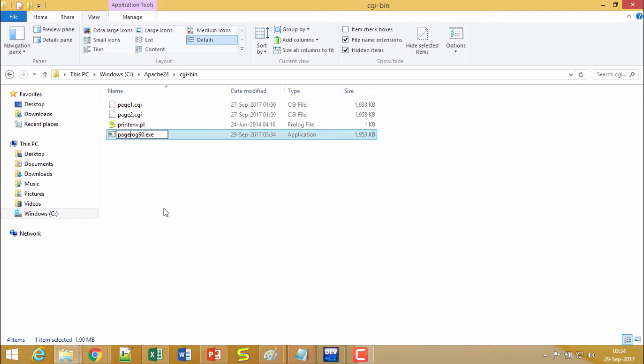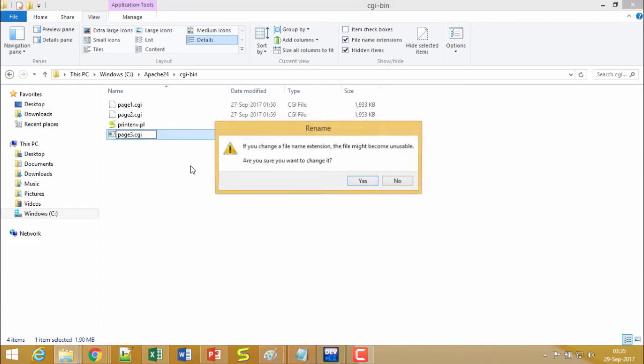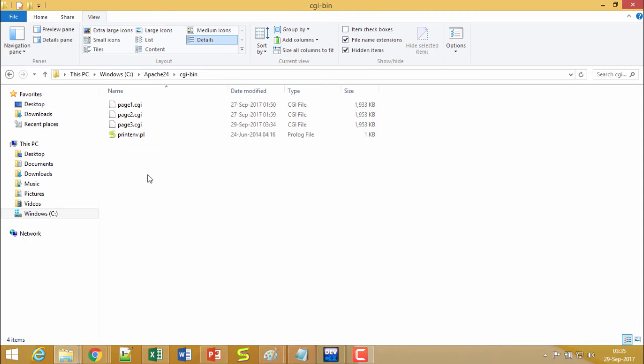I am making a rename of this. I am giving this name as page3.cgi. We can change the program extension from exe to cgi, and the file name can also be changed. page3.cgi is the name.